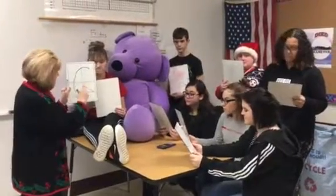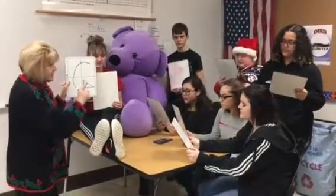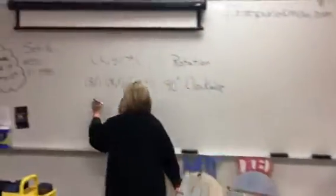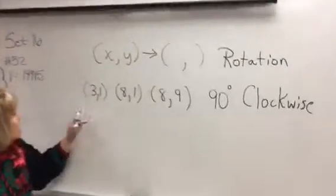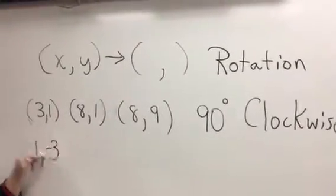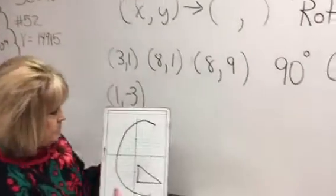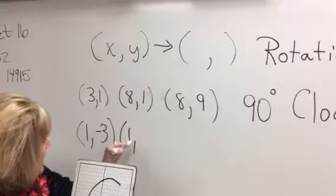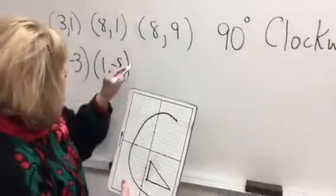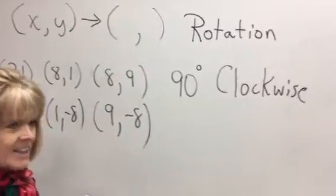What are the new points of this shape? The first point was at (3, 1) and now it's at (1, -3). The second point is at (1, -8). The third point is at (9, -8).